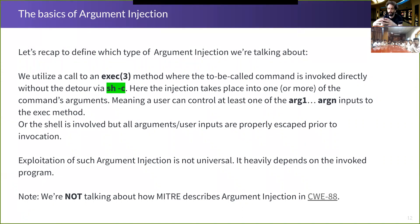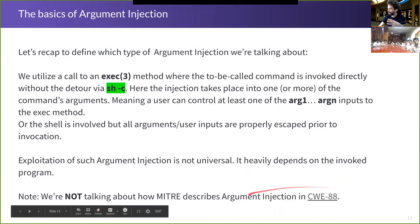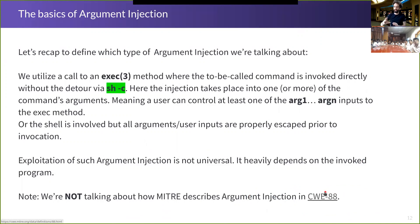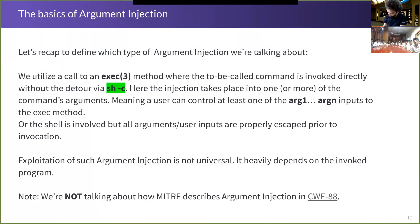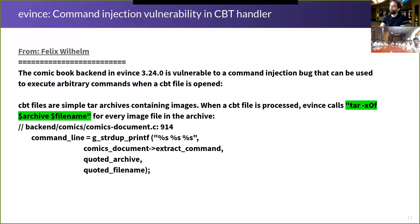By argument injection I'm talking about exactly this concept. CWE-88 is the Common Weakness Enumeration for argument injection — they interpret it slightly differently, but here we're talking about direct invocation of programs where we are able to influence one or more of the arguments to that command.